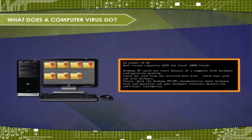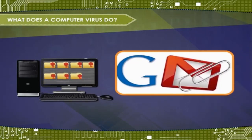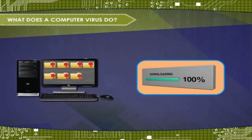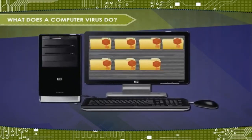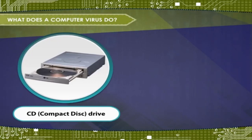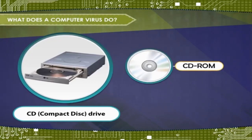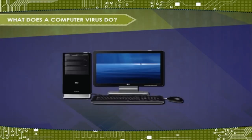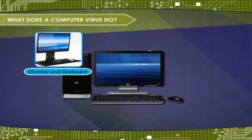It can infect a file before it is attached to an email message or transferred to a disk, and thus spread from one computer to another. A computer virus is incapable of performing these tasks: it cannot infect files on write-protected disks, for example CD-ROM. It cannot infect computer hardware, for example monitor and keyboard. It infects only software.